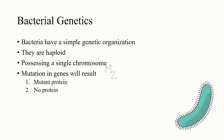Bacteria have a simple genetic organization relative to eukaryotic organisms. They are haploid, usually possessing a single chromosome and therefore a single copy of each gene. This is in contrast to eukaryotic cells such as human cells, which are diploid — meaning they have a pair of each chromosome and therefore two copies of each gene. In diploid cells, one allele may be dominant while another may be recessive. In haploid cells, any mutation results in a cell synthesizing either a mutant protein or no protein at all, depending on the type of mutation.